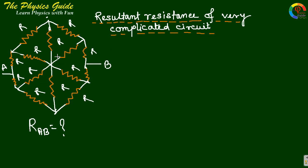Now we are going to solve this type of problem. We are seeing this circuit, and we see that there will be symmetry if we take this point and this point and draw an imaginary line along this. Then we see that there will be symmetry between the left side circuit and the right side circuit. The orientation and connections on the left are similar to the right hand side.